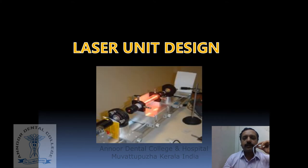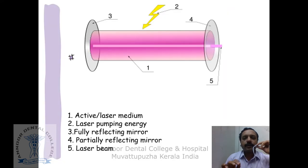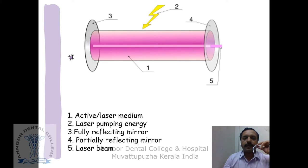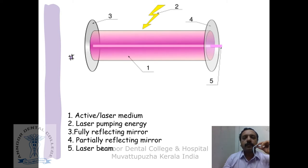The laser unit consists of the following components. First is the laser medium or active medium — it is the source of atoms and can be either solid, liquid, or gas. The laser medium determines the wavelength of emitted light and is encased by a housing tube or optical cavity made of metal, ceramic, or both. Next is the laser pumping energy, that is the external power source which excites or pumps the atoms in the laser medium into a higher energy level. Third component is the mirrors: one fully reflective and the other partially reflective, located on either end of the optical cavity, allowing reflection of photons back and forth across the chamber. The laser beam is emitted through the partially reflective mirror.